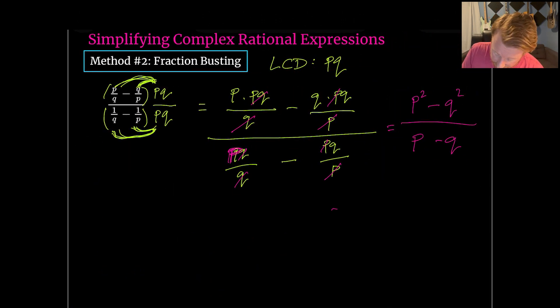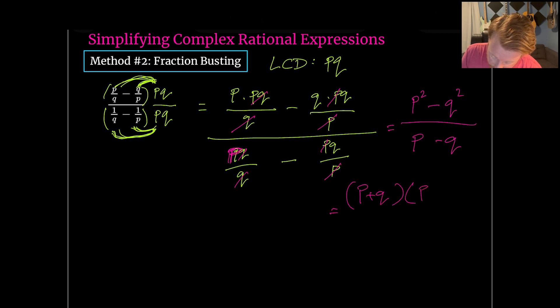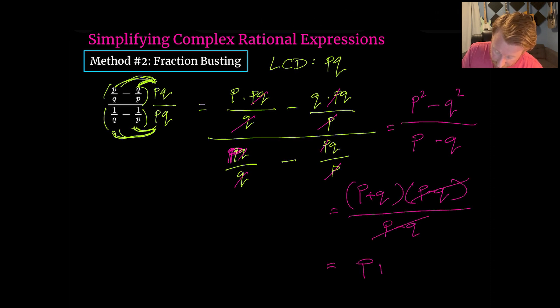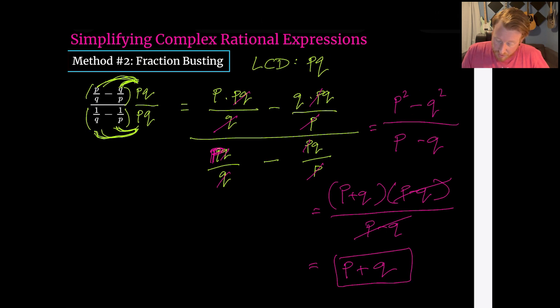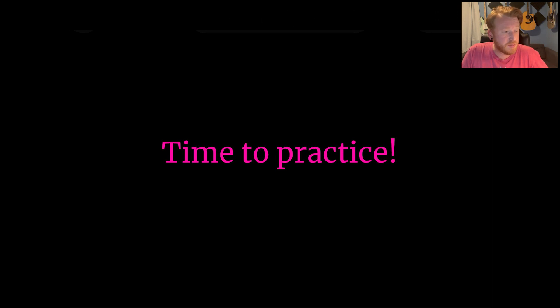It finishes the same way: factor the numerator as a difference of squares — (P+Q)(P−Q) over (P−Q). Those (P−Q) terms cancel, and we're left with P + Q. Same answer either way — thank God, math works. At this point there's nothing left to do but go practice. I wish you well and I'll see you in the next video. Thank you.